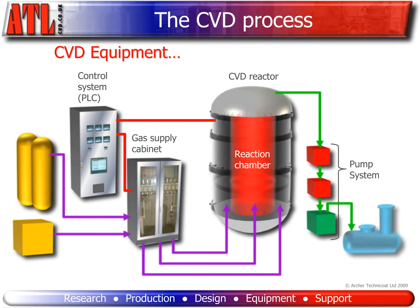From here, the waste gases are fed into a scrubber, which scrubs effluent gases clean and neutralizes acid gases. Often the last pump is a liquid ring pump, or LRP for short. This pump does two jobs: it draws out the waste gases and feeds them into the scrubber, and it also draws in the neutralizing fluids from the scrubber and thoroughly mixes them with the waste gas, further helping to treat these gases.